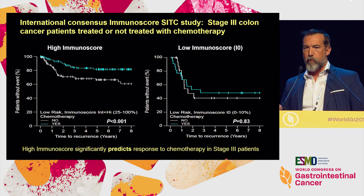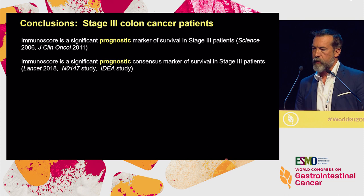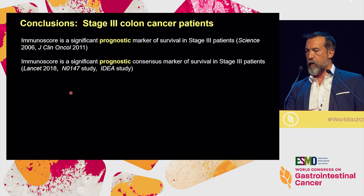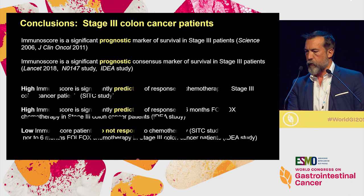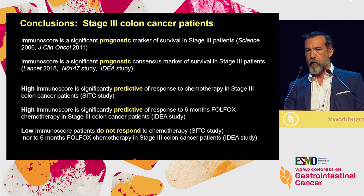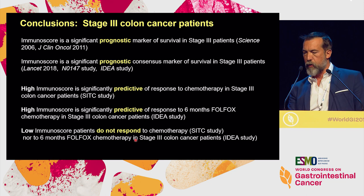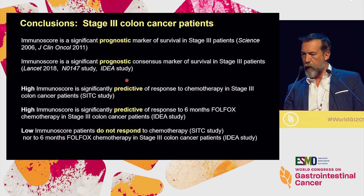Based on all these results: immunoscore is prognostic for stage 3, published in Science in 2006 and GCO in 2011, and validated across four independent datasets — the SITC study, French cohort, N0147 phase 3 trial, and IDEA phase 3 trial. Based on the IDEA trial, high immunoscore significantly predicts response to chemotherapy, in both the low-risk and high-risk groups. Low immunoscore patients do not significantly respond to six-month chemotherapy. We would like to validate these results in other IDEA-like clinical trials from other countries.